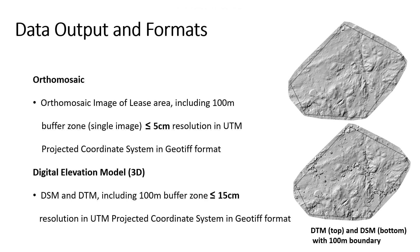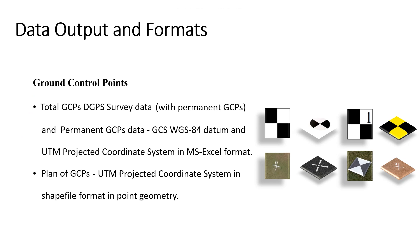Next, we will check on the GCPs. Compared with the previous SOP, the new updated SOP clearly defines the GCPs that must be submitted to IBM, divided into three files. First, the total GCPs DGPS survey data including permanent GCPs must be submitted in Geographic Coordinate System WGS84 and UTM projected coordinate system in Excel format. Second, the permanent GCP data must be submitted both in GCS WGS84 and UTM projected coordinate system in Excel format. Third, the plan of the GCPs must be submitted in UTM projected coordinate system in shapefile format.